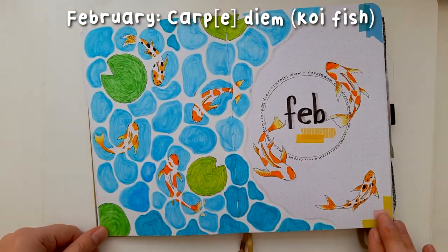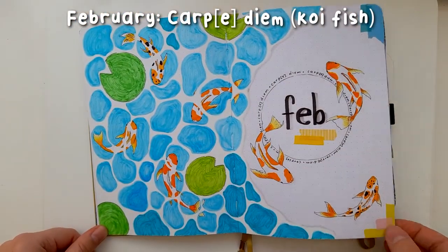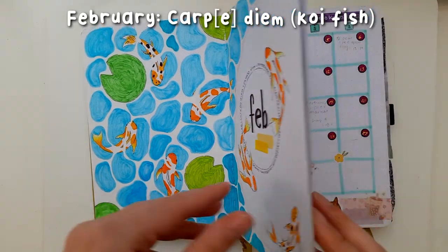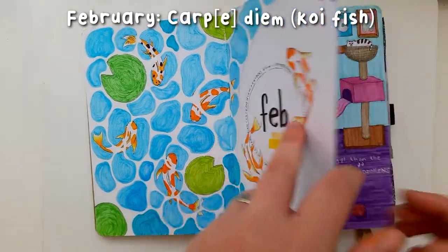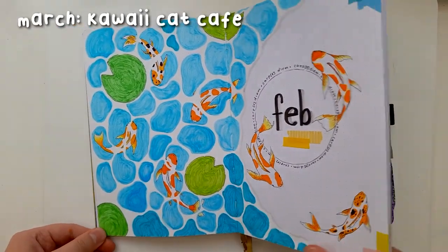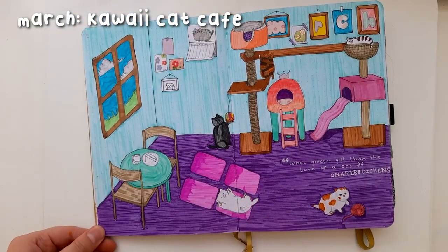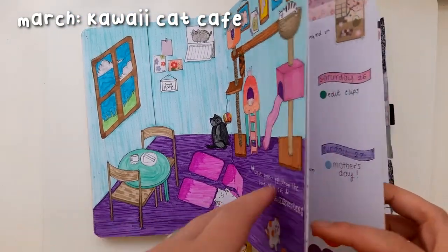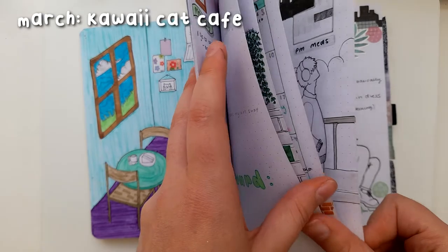I did a Carpe Diem theme, so very punny. It was a koi fish, koi pond theme and again, love this so much. In March I did a Kawaii Cat Cafe theme. I didn't get to show you the setup for this one because the footage got completely corrupted.